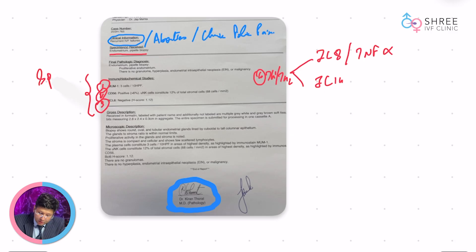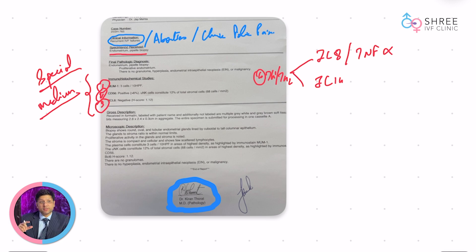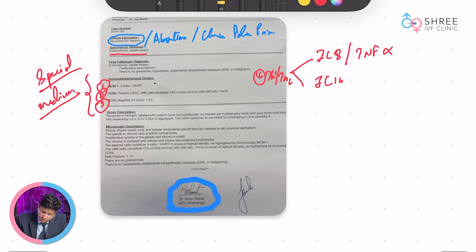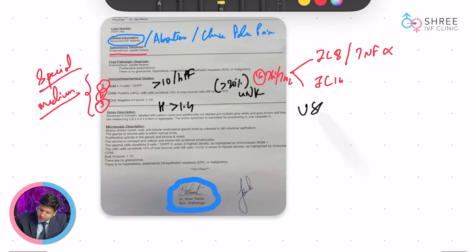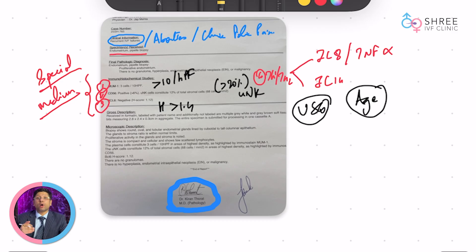There is a special medium used to take and transport this biopsy, manufactured at our hospital premises. Once manufactured, the specimen is sent to the pathologist for reporting. Now here is where it gets interesting — if MUM1 is more than 10 per high power field it is considered significant; a BCL6 score of more than 1.4 is significant; and if there are more than 20% uterine natural killer cells in the reporting, it is considered a significant report. Along with this, we strongly look at the ultrasound report, the age of the patient, and previous clinical, embryological, or abortive history. That is critically important to interpret this report.